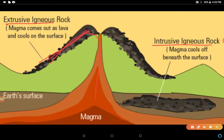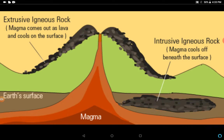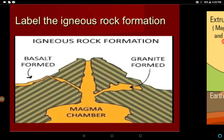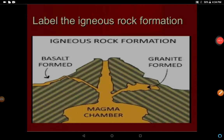After cooling down, lava converts into extrusive igneous rock. So magma comes out as lava and cools on the surface. But under the surface it is intrusive igneous rock - when magma cools off beneath the surface without coming outside, it becomes intrusive igneous rock. This is a very important diagram. Extrusive igneous rocks are found in basalt form, and intrusive igneous rocks form granite.